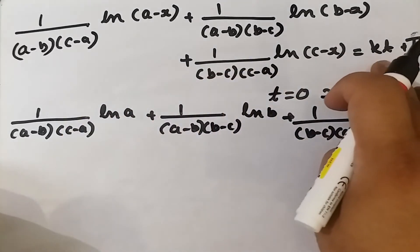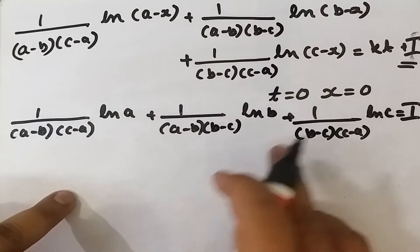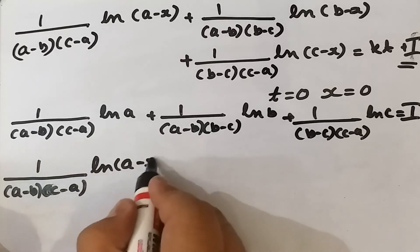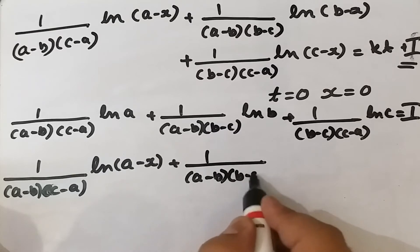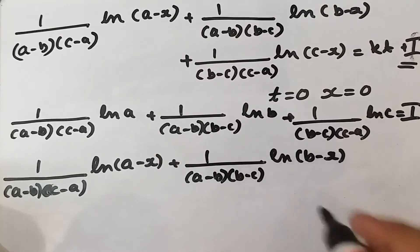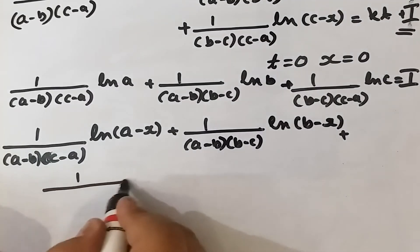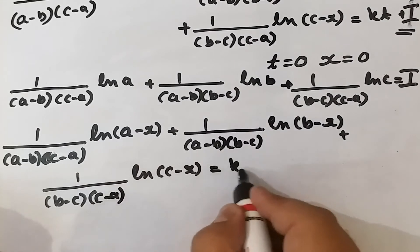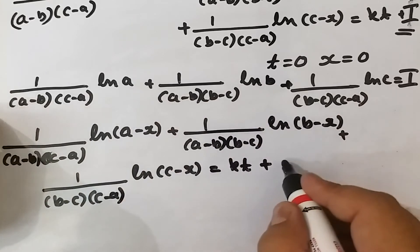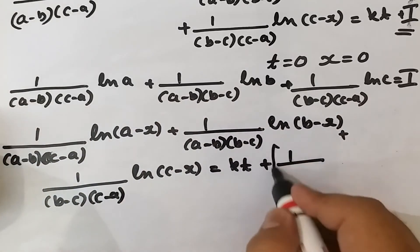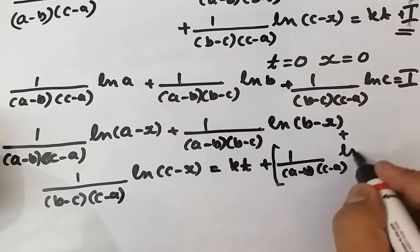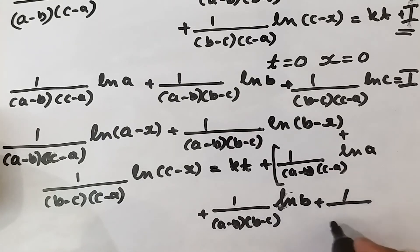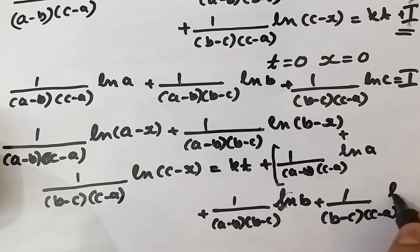Substituting the value of I back into the integrated expression, we now have the full equation with the ln(a minus x), ln(b minus x), and ln(c minus x) terms on the left and the corresponding ln a, ln b, and ln c terms from I on the right side.